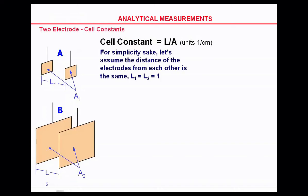These electrodes have a fixed size. For simplicity's sake, let's assume that the distance of electrodes from each other is the same, or about 1. Your conductivity cell, therefore, is a 1.